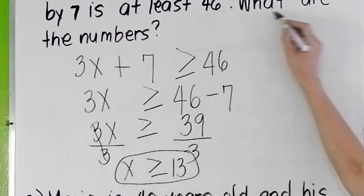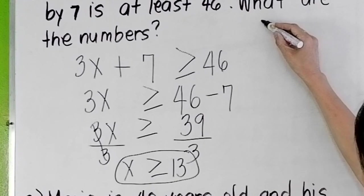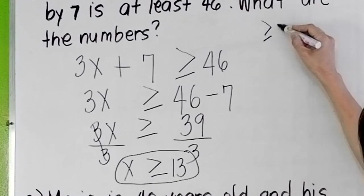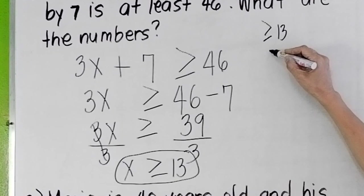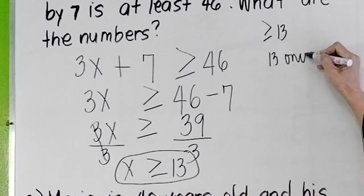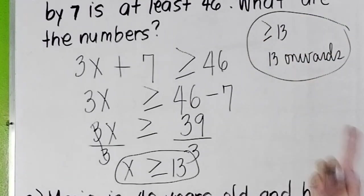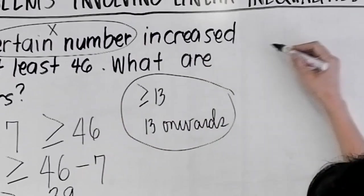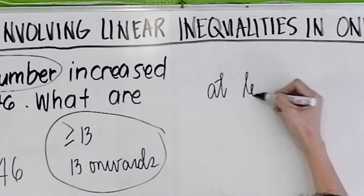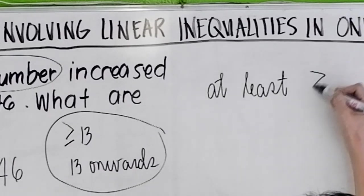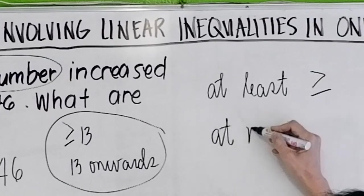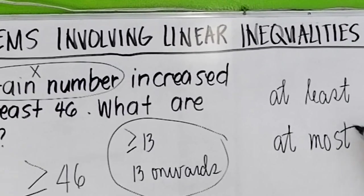What are the numbers? The numbers are numbers 13 and above or greater than or equal to 13, or you can interpret it as 13 onwards. Now if you have at least, you use greater than or equal. But if the problem is, let's say, at most, let's say this is changed to at most 46, then you use less than or equal.